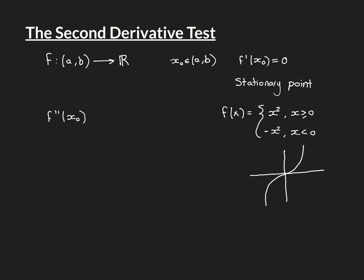There are examples of functions that have a stationary point where the second derivative doesn't actually exist. Here's one: the function f(x) equals x² for x ≥ 0, and minus x² for x < 0. Rather than x² going up, it goes down on the negative side. This function is defined on the entire real line and is differentiable everywhere for positive numbers because the function is just x², and for negative numbers because it's just minus x², both of which are differentiable.